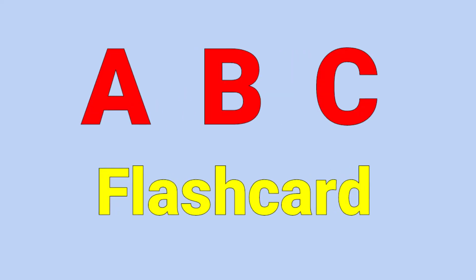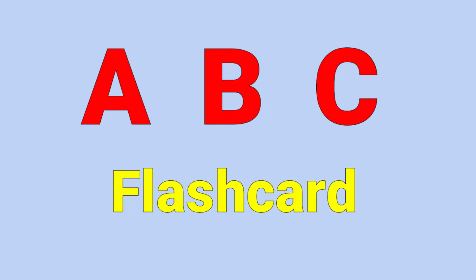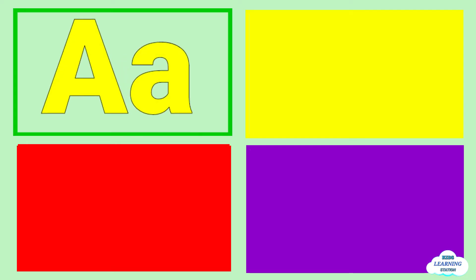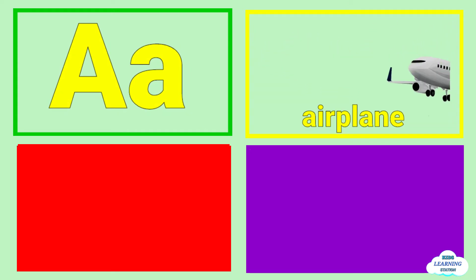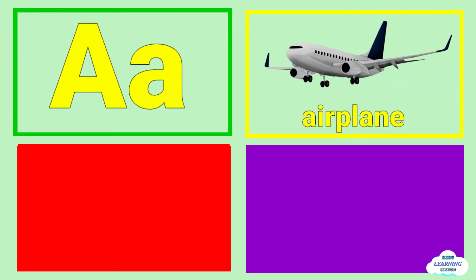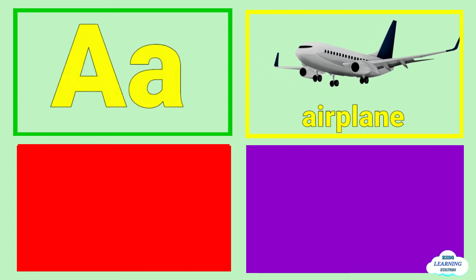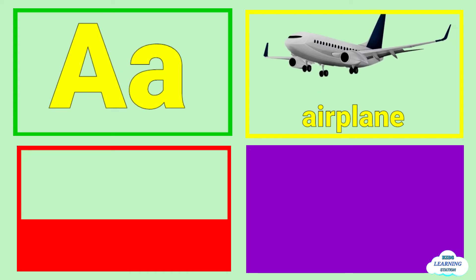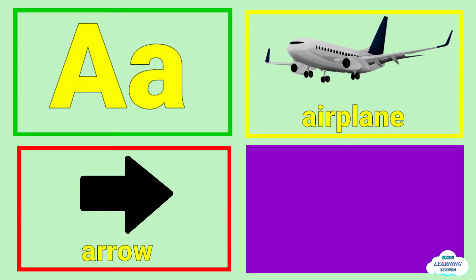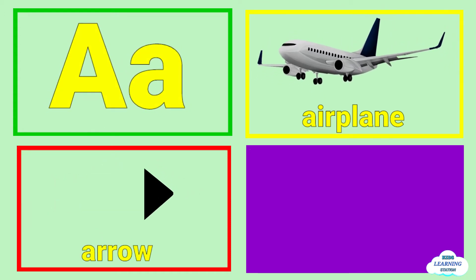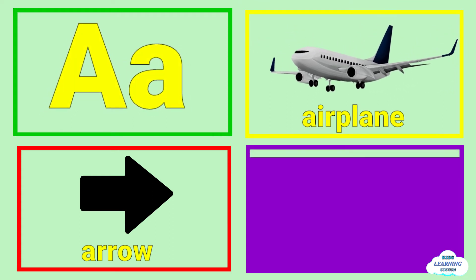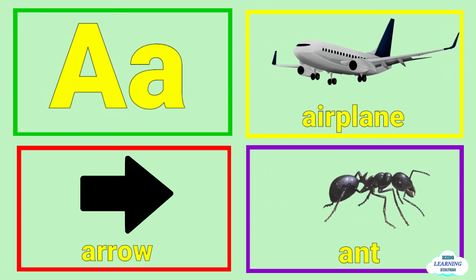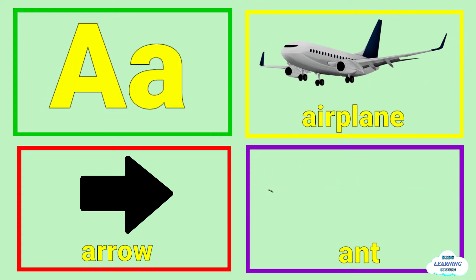A B C flash card. A is for airplane, airplane. A is for arrow, arrow. A is for at, at.